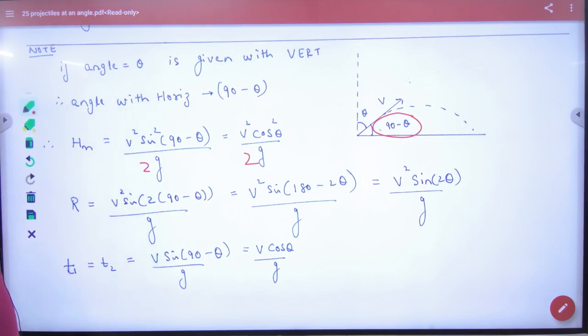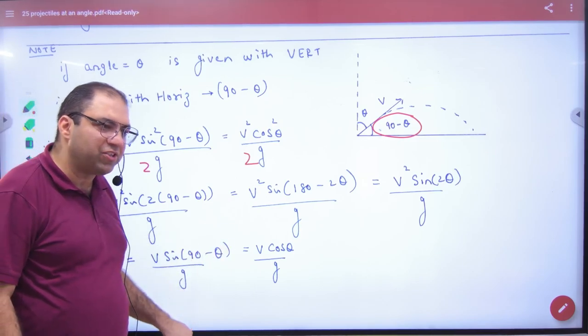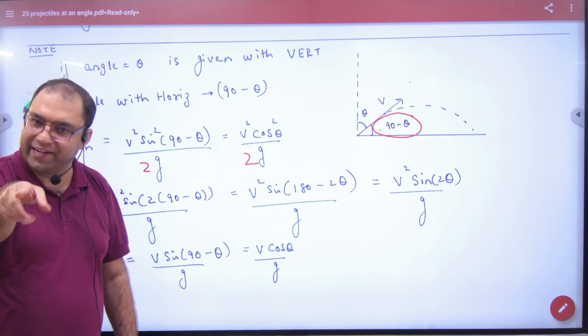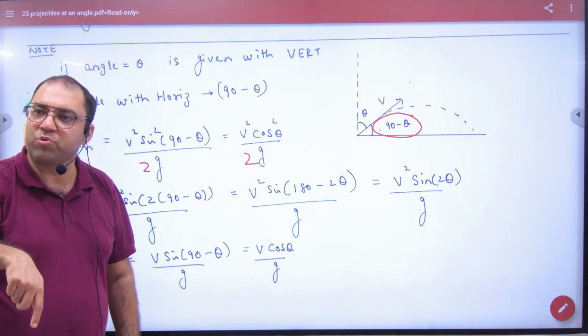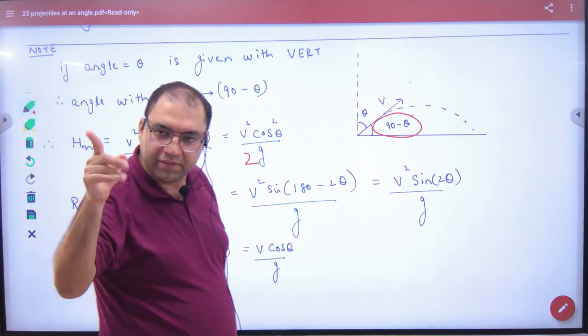What is the time of ascent? V sine theta by G. But here, V into sine of 90 minus theta by G. What is the sine of 90 minus theta? Cos theta. The whole formula will change except range. What is the step clear here?